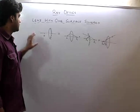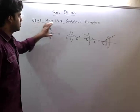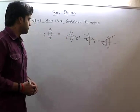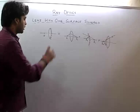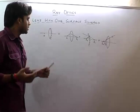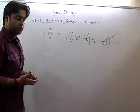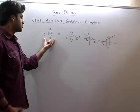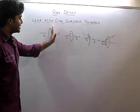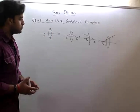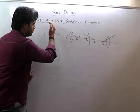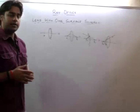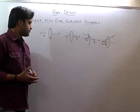Let's start off with a lens with one surface silvered. If I have a convex lens and make one side a mirror, how do we analyze these things?